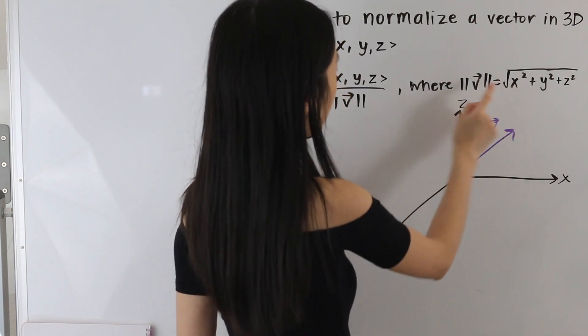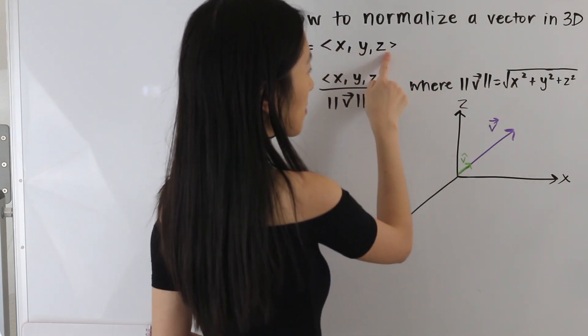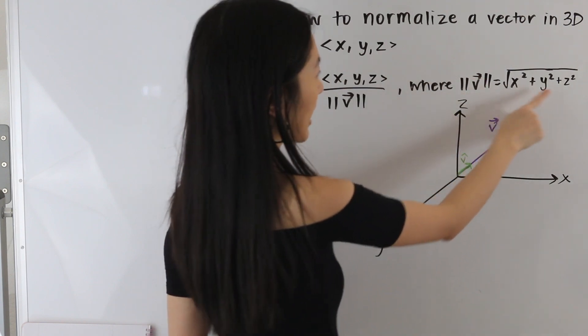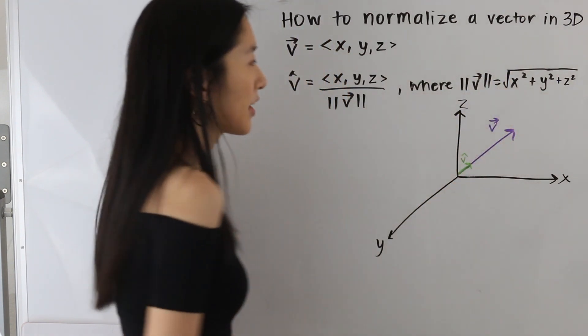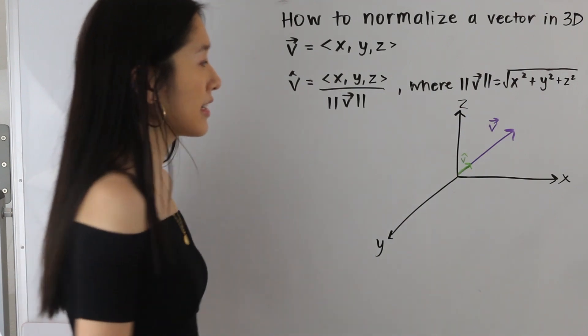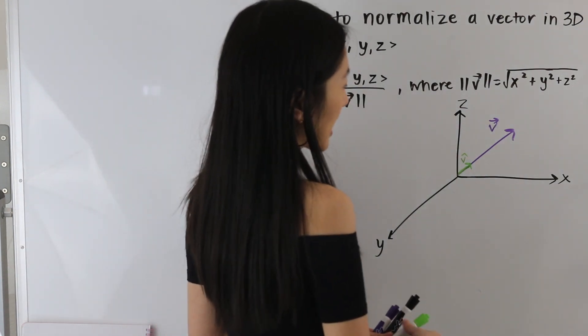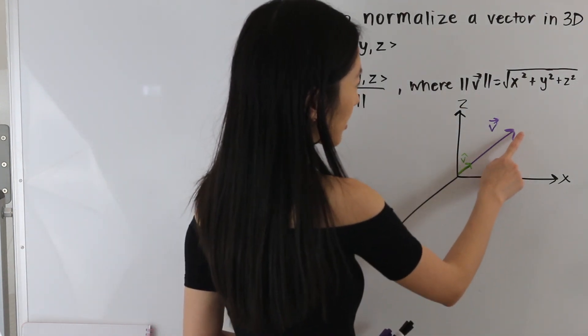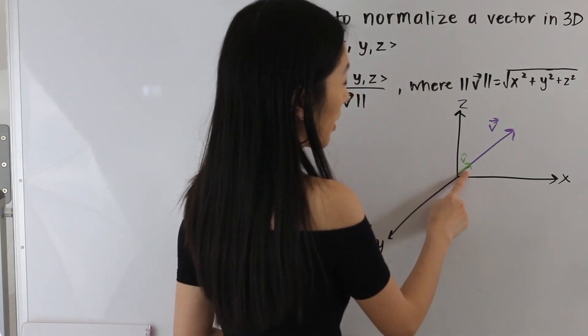So all we're doing is we're taking the squares of each of the components of our vector and adding them up, and then taking the square root of that. And all a normalized vector is is a vector in the same direction as the original vector, but it just has a magnitude of 1.